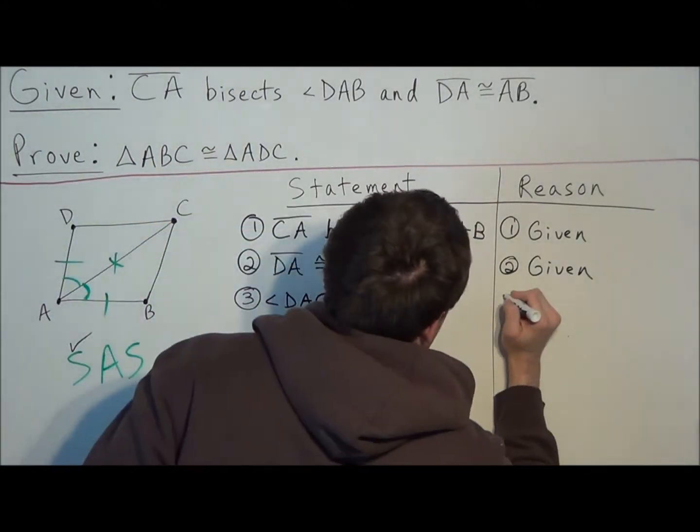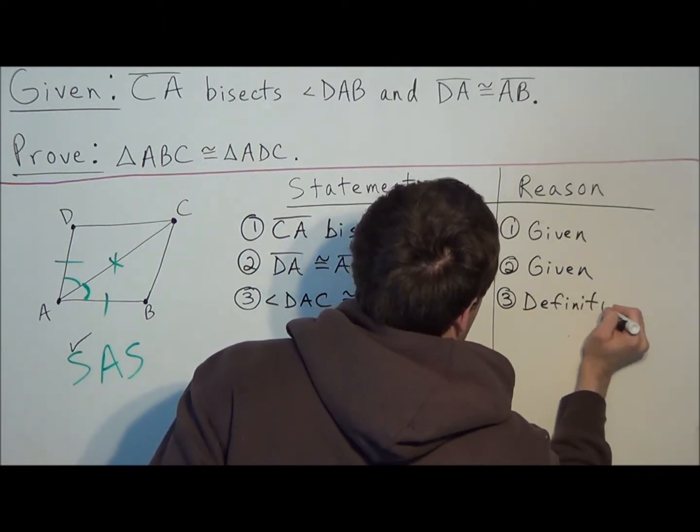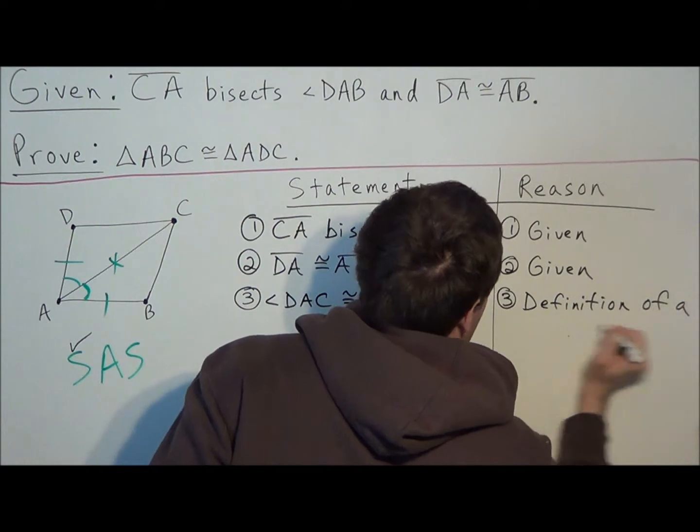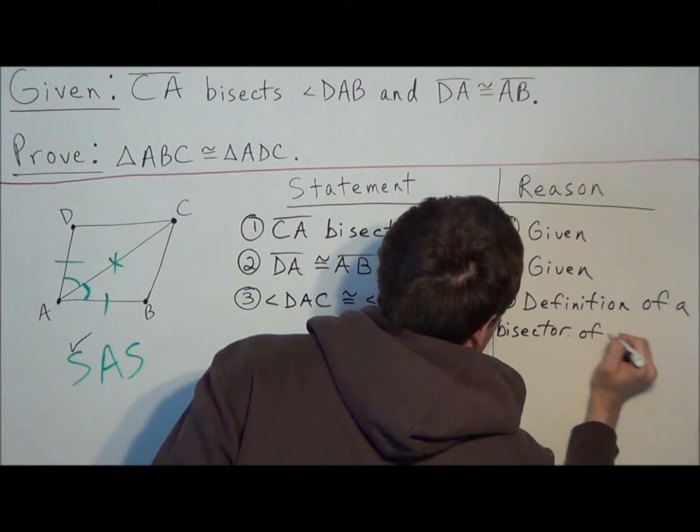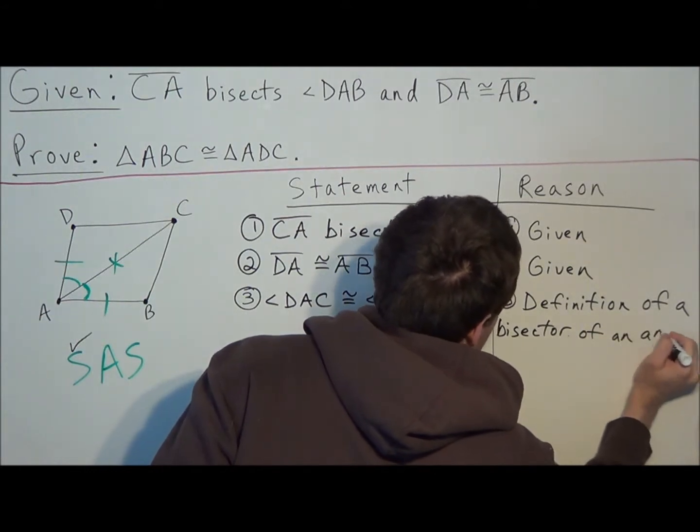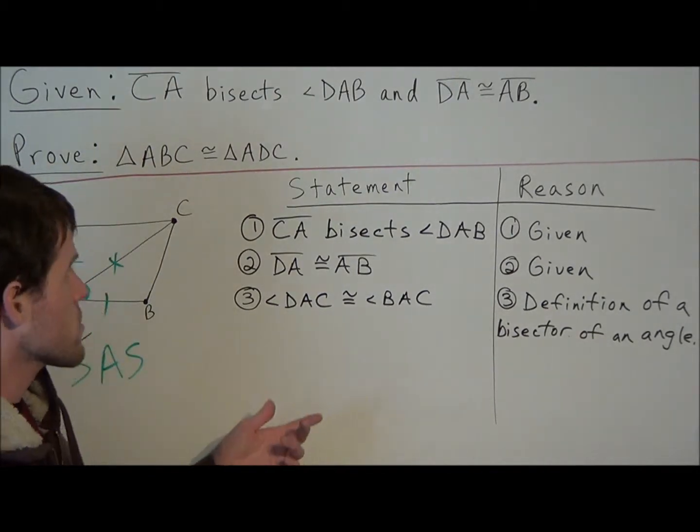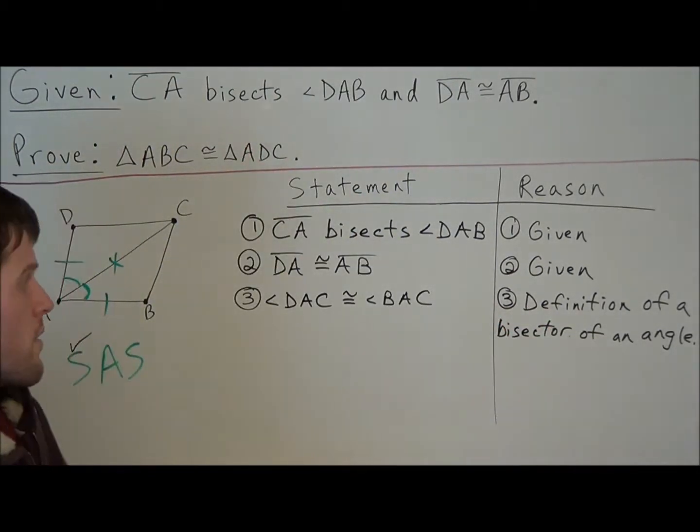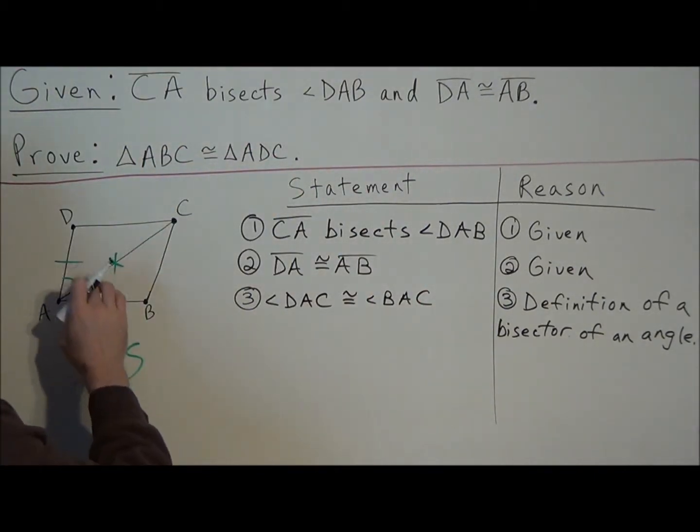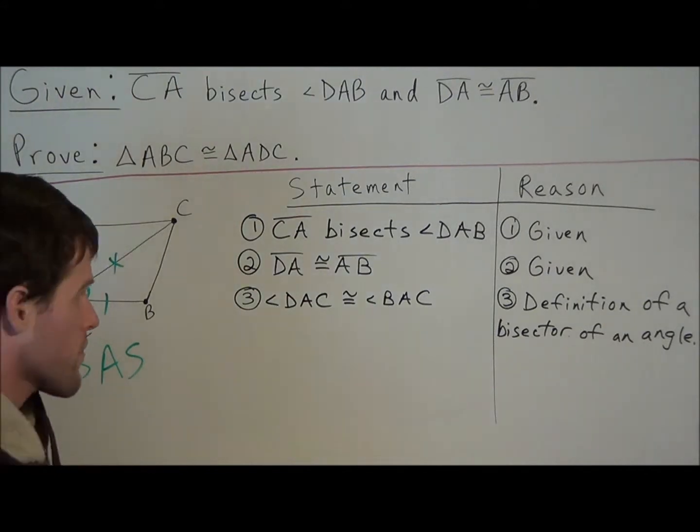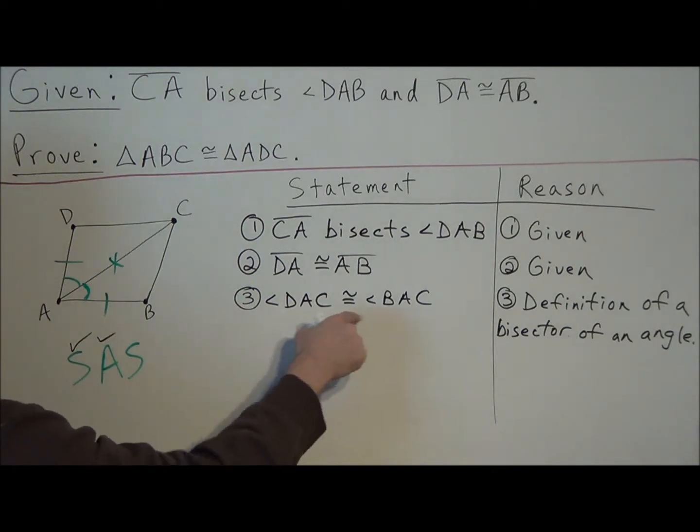And the reason why this is true, we can write the definition of a bisector of an angle. That when we have a bisector of an angle, it will cut the angle into two congruent angles. It cuts it in half. So now we go over to here and we can check off the A because we established our pair of congruent angles.